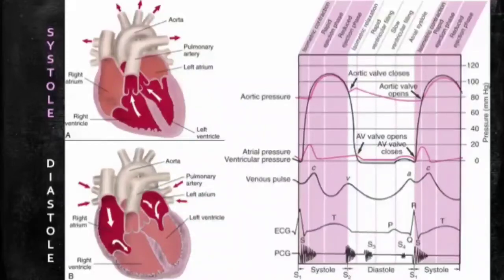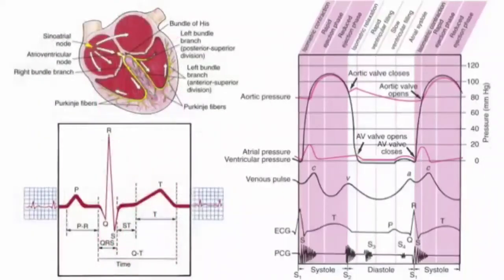The cycle begins anew with ventricular contraction and atrial filling occurring at about the same time. The cardiac cycle continues without resting and constantly adjusts to the variable demands of work, rest, digestion, and illness. An intrinsic electrical conduction system enables the heart to contract and coordinate the sequence of muscular contractions. An electrical impulse stimulates each myocardial contraction, originating in the sinoatrial node, or SA node, located in the wall of the right atrium.